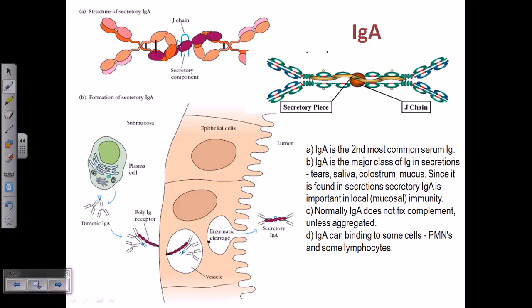Here you can see the dimerized structure of IgA. Two monomers are joined together using a J chain. There is also another peptide segment visible here in dark reddish color, called the secretory component, secretory protein, or T component. The secretory component also helps to hold the two IgA monomers together.